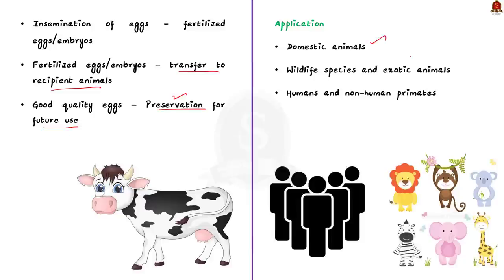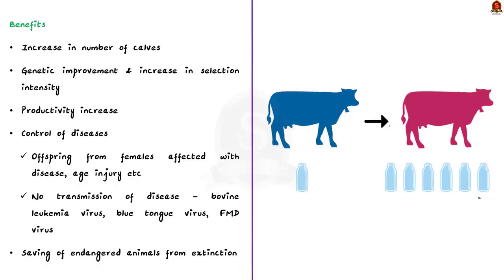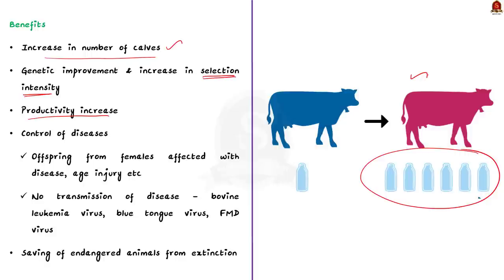Embryo transfer techniques have been applied to nearly every species — domestic animals, many species of wildlife, exotic animals, humans and non-human primates. It is a rapidly developing science with a very short lag time between discovery and application. The first benefit is to get many calves from a genetically superior single female; naturally only a few calves can be produced in her lifetime. The second benefit is genetic improvement of the animal and increased selection intensity. The third benefit is to increase productivity — calves produced from embryos of high-productivity females will also have high productivity.